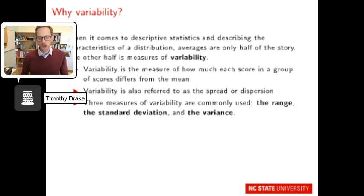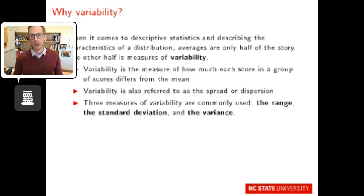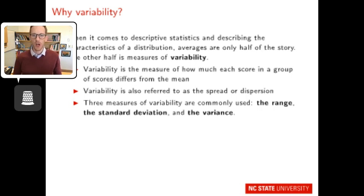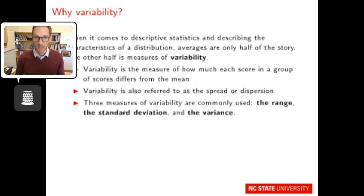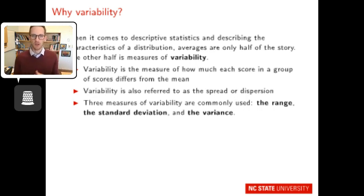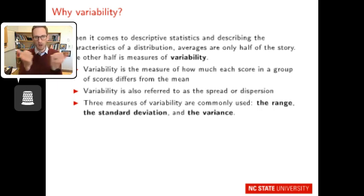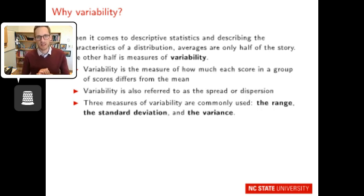Measures of central tendency are really only half the story. We also want to know about the variability within those measures. Variability is a measure of how much each score in a group differs from the mean — also referred to as spread or dispersion. Three common measures of variability are the range, the standard deviation, and the variance.